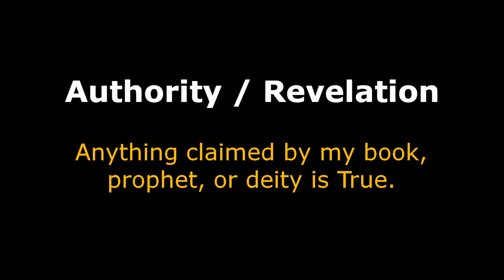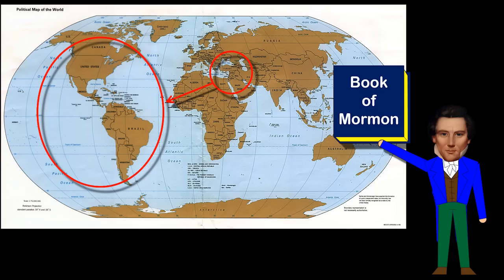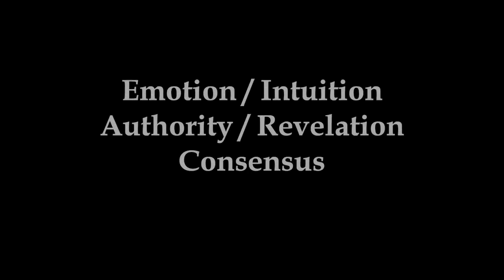Or better yet, I could define truth as anything which coincides with an authority, like maybe the dictates of a prophet or the writings of holy scripture. I could believe that the earth was created in six days, or that Native Americans are really descendants of Jewish migrants. And again, I would be perfectly justified because that's what my definition for truth requires.